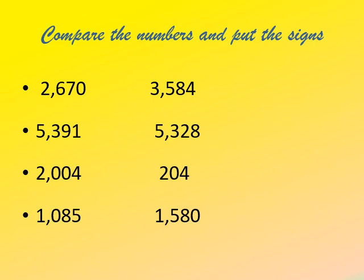Let us understand comparing numbers with this example: 2670 and 3584. To compare, we go digit by digit, starting at the thousands place. The number on the left has 2 in the thousands place and the number on the right has 3. Since 3 is greater than 2, the number on the right is greater, so the symbol's mouth is open towards it.